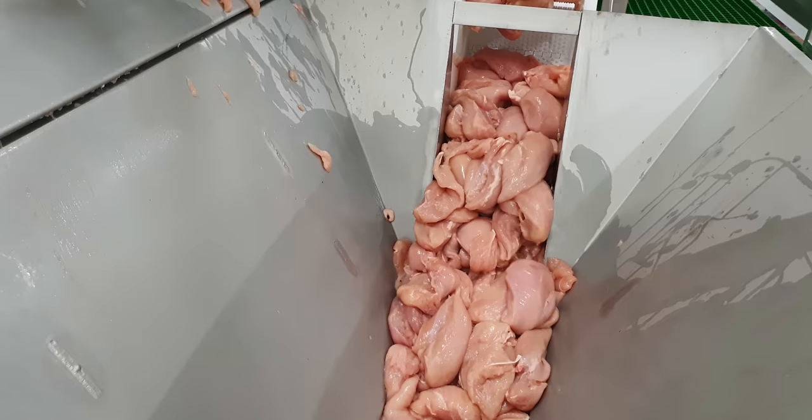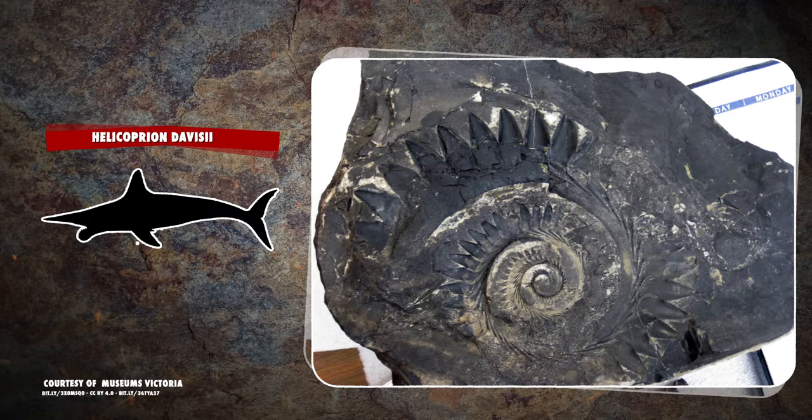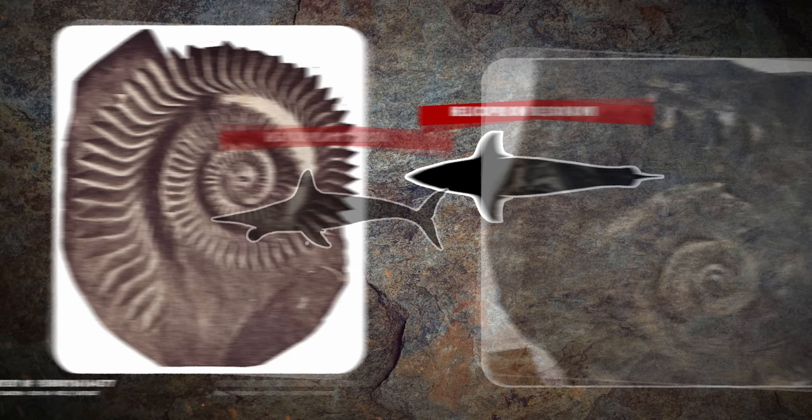Thanks to the clues its teeth have given us, Helicoprion are now divided into three distinct species. Helicoprion davisi had stout little teeth that were widely spaced with tall cutting surfaces. Helicoprion besanoi, by contrast, had narrow, closely spaced teeth with short cutting surfaces.